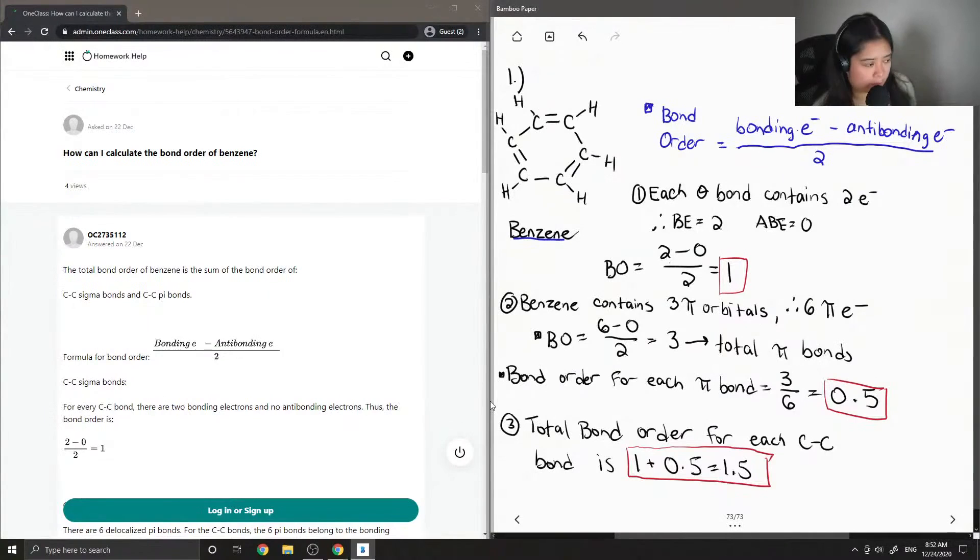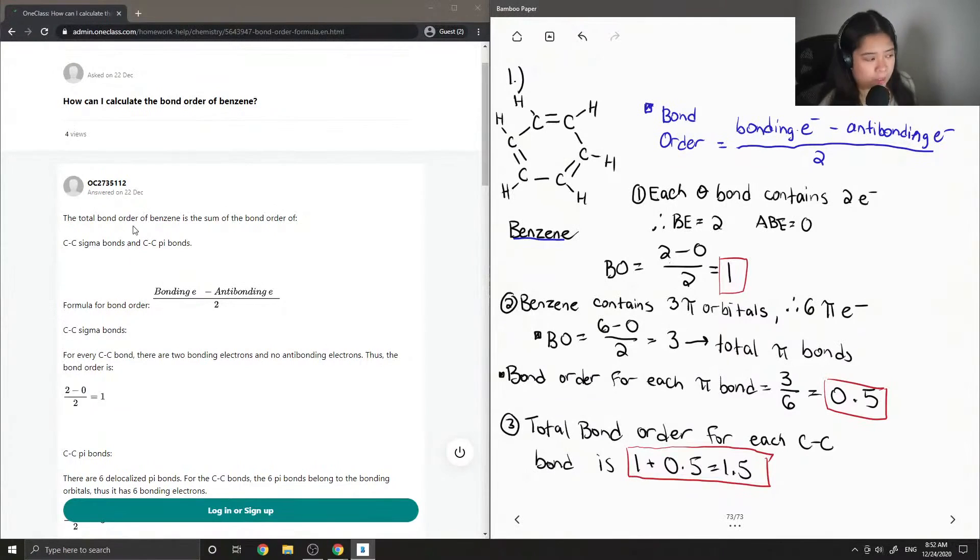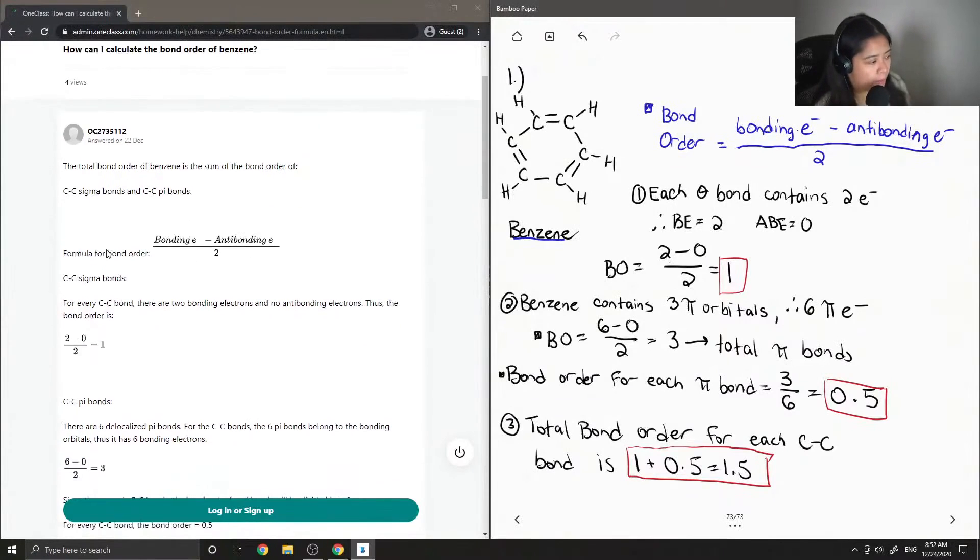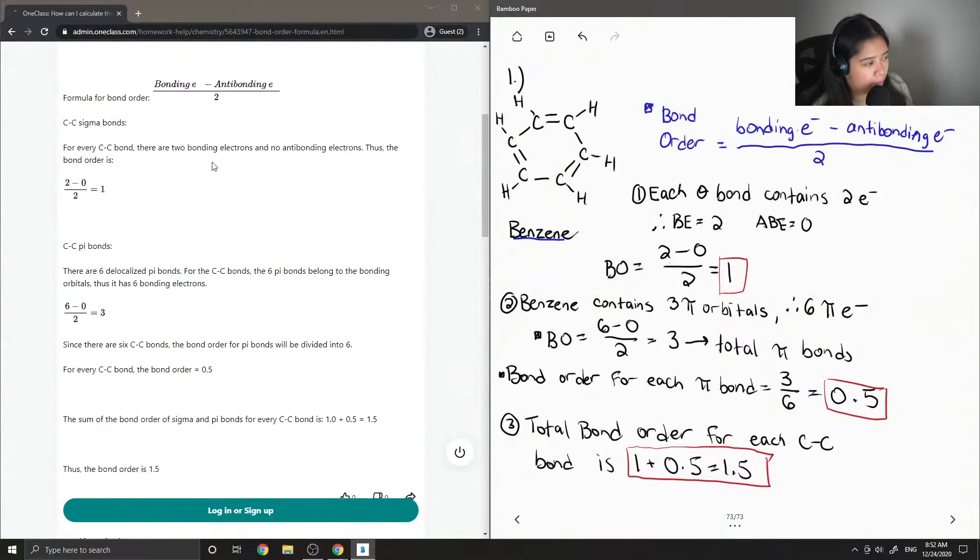Okay, so now let's see what the junior tutor said. The total bond order of benzene is the sum of the bond order of the carbon-carbon sigma bonds and carbon-carbon pi bonds. The formula for the bond order is bonding electrons minus antibonding electrons divided by 2. For the carbon-carbon sigma bonds, for every carbon-carbon bond, there are two bonding electrons and no antibonding electrons. Thus, the bond order is 2 minus 0 divided by 2, which is equal to 1.